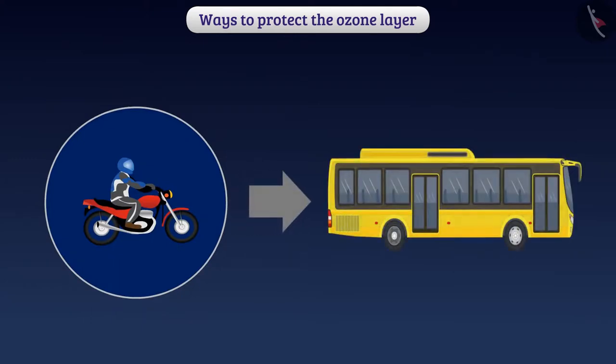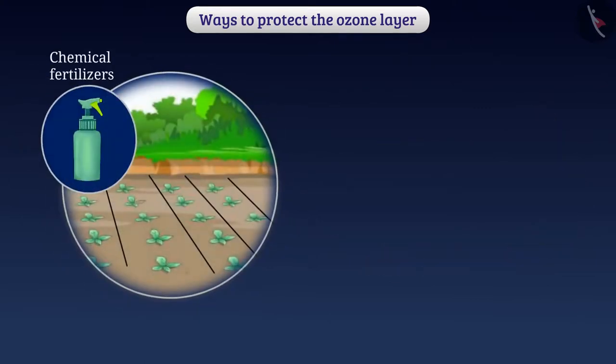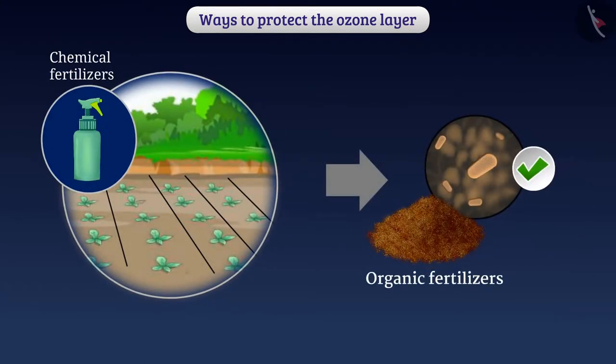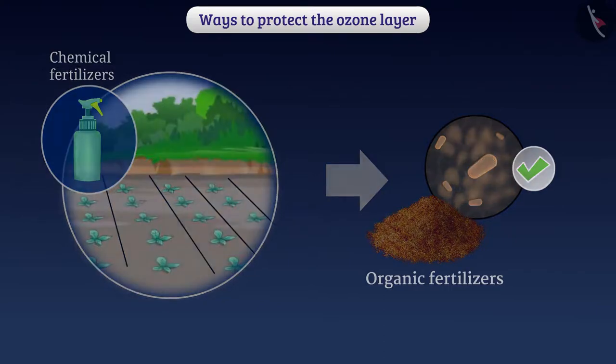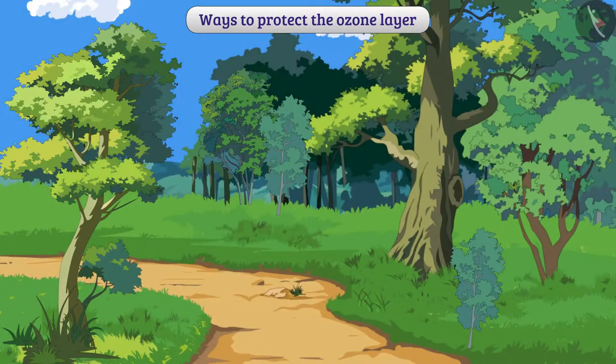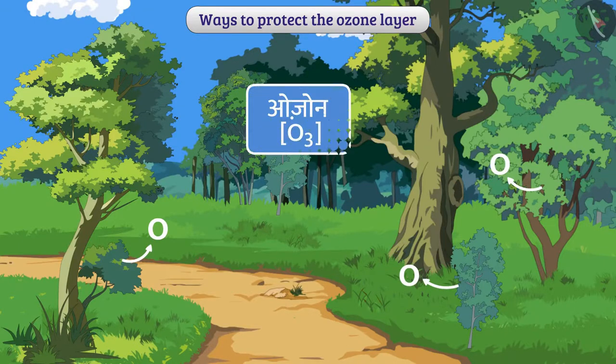For this, we can use public transport systems. In farming, we can use organic fertilizers instead of chemical fertilizers. Planting trees will generate more oxygen which will be helpful in ozone formation.